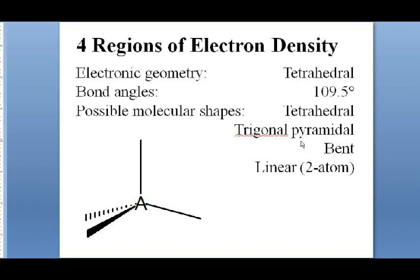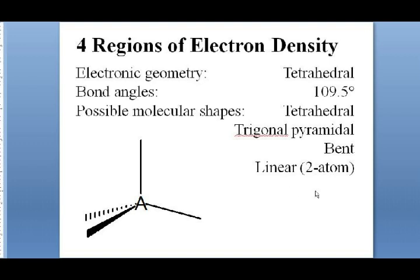Four regions of electron density define a tetrahedron — a three-dimensional structure. Simple lines are in the plane of the paper, wedge bonds come out toward you, and dashed bonds go into the paper away from you. All positions are 109.5 degrees apart in the electronic geometry. If all four regions lead to atoms, the molecular geometry is tetrahedral. Remove one to get a trigonal pyramid, two for bent, or three for a two-atom linear.